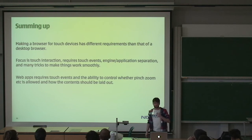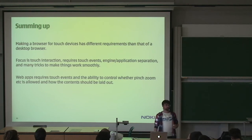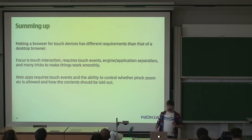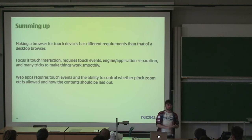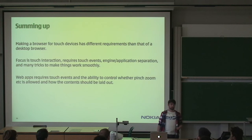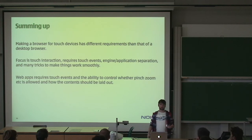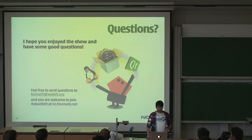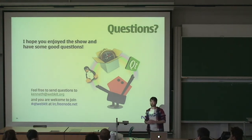So in summary, making a mobile browser with touch devices has a lot of different requirements compared to a desktop browser. Our focus is on touch interaction, on seeing your content and interacting with it. When you use the engine you need engine-application separation and a lot of small tricks to make everything work perfectly. For web apps, the application needs support for the web author to decide whether the browser should support scaling or even show the browser chrome. I hope you've enjoyed the talk and have some good questions.